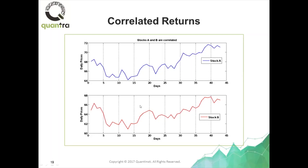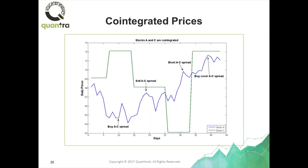It's even clearer if we illustrate it with two hypothetical price time series. Stock A is the one on top with a blue line, and stock B is the one at the bottom with the red line — these are the daily prices. You can see that I've constructed these two stocks so that they are correlated. When stock A goes up, stock B goes up. When stock A goes down, stock B goes down. Their returns are very correlated.